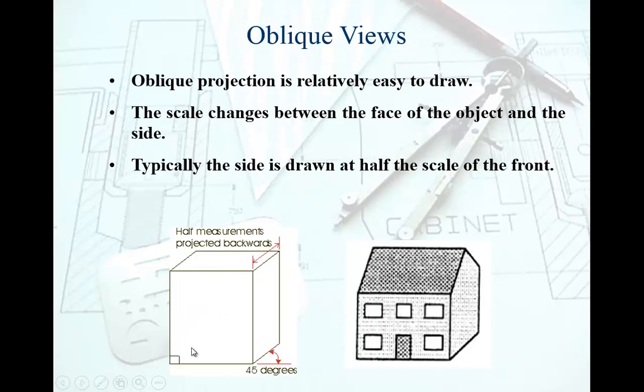Whatever scale we choose on this face, as we are going in, we're going to reduce the scale by half. That side is about 45 degrees to the front face and that's at 90 degrees. So that was oblique views, not very common in engineering.